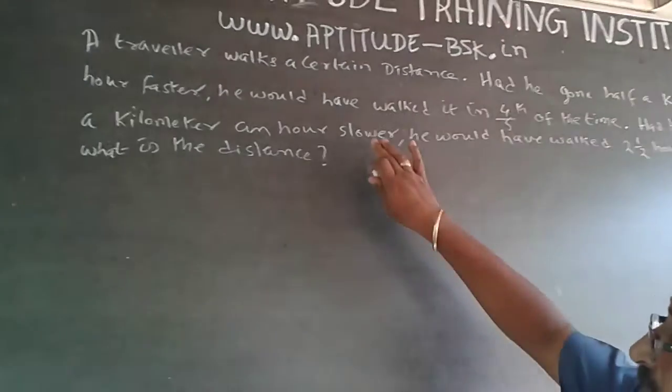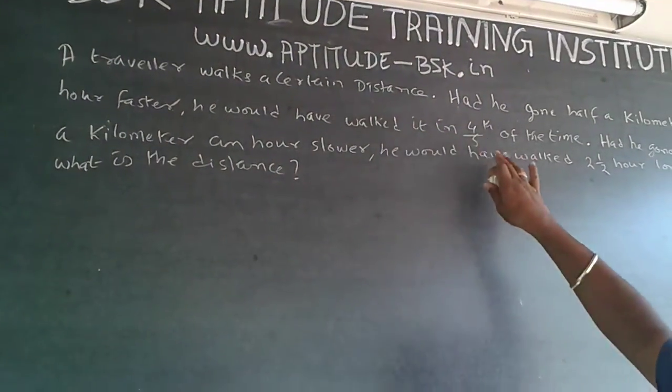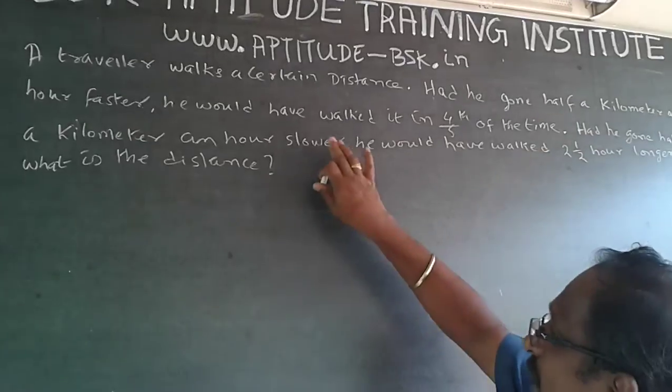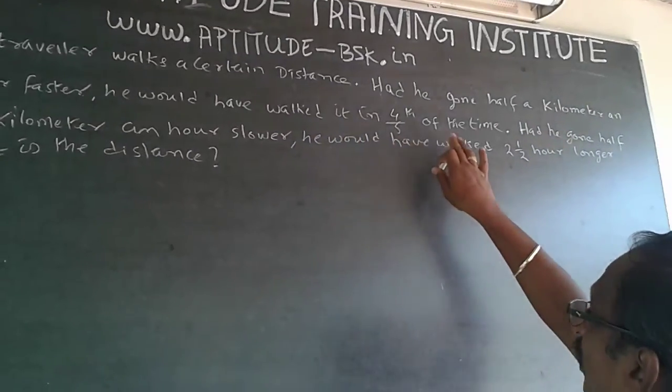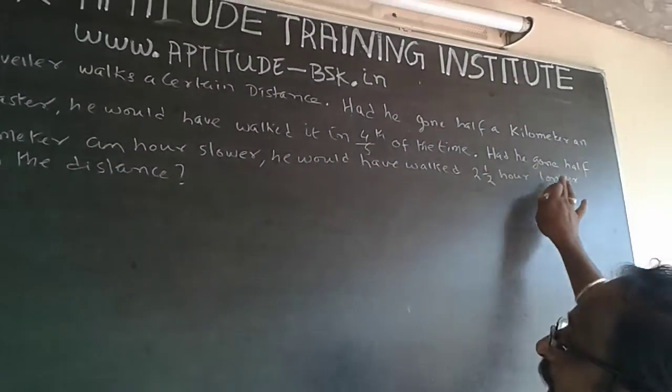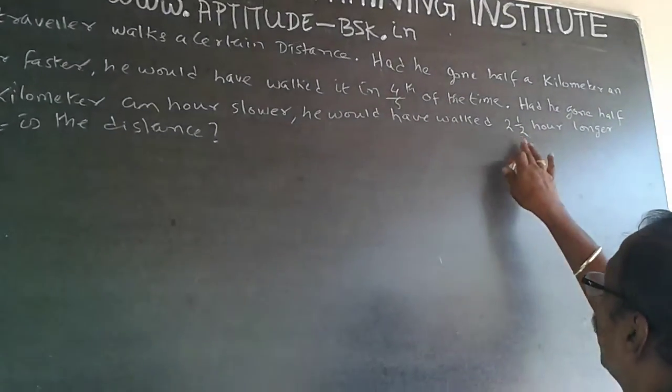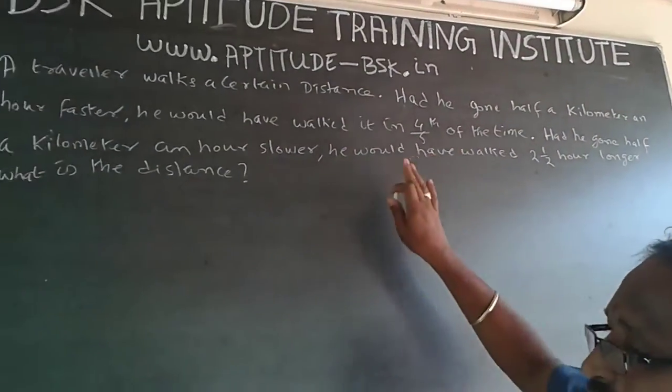The question is, a traveler walks a certain distance. Had he gone half a kilometer hour faster, he would have walked it in four fifths of the time. Had he gone half a kilometer hour slower, he would have taken two and a half hours longer. What is the distance?